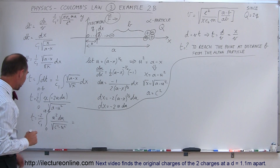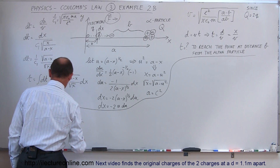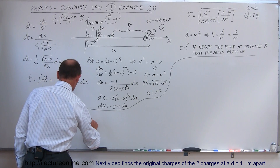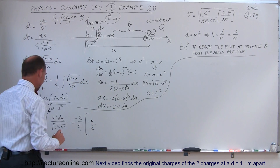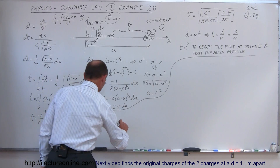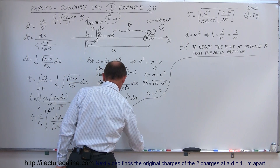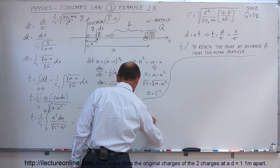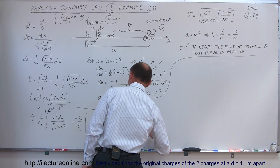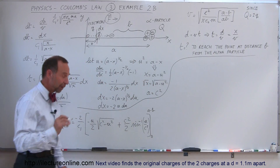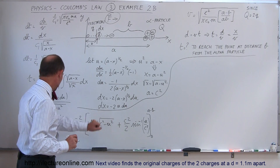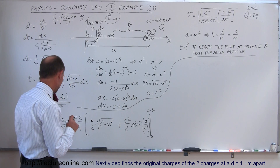Now we're ready to integrate. We still have the minus 2 over c1 for the constant. When we integrate u² du over the square root of (c² minus u²), we get: minus u over 2 times the square root of (c² minus u²), plus c² over 2 times the arc sine of u over c, evaluated from 0 to (a minus b).